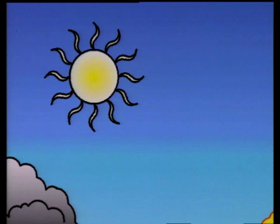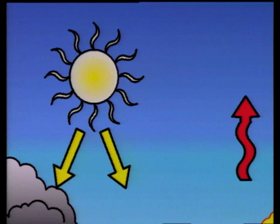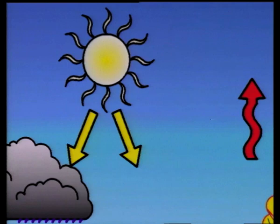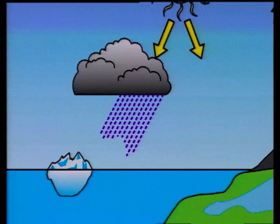The climate system is a huge heat engine which is driven by the radiation from the sun. The differences in the incident solar radiation in the equatorial and polar regions, between day and night and summer and winter, generate temperature gradients which drive the atmospheric circulation.